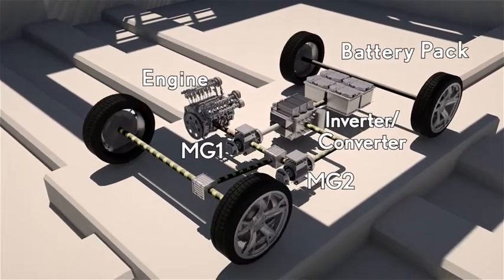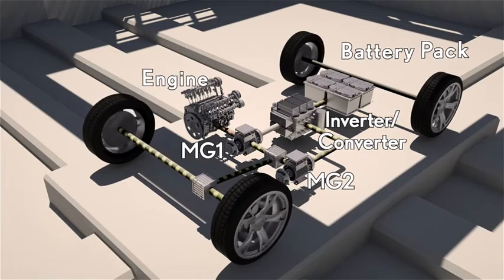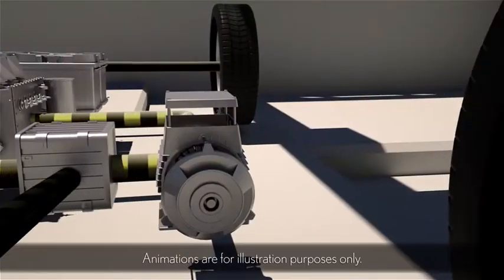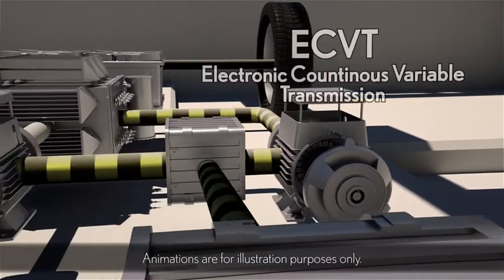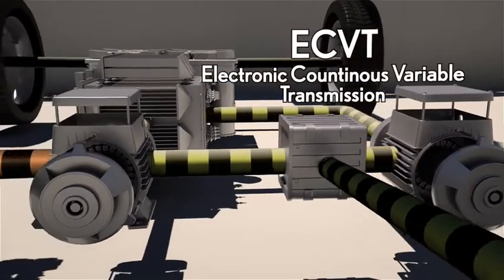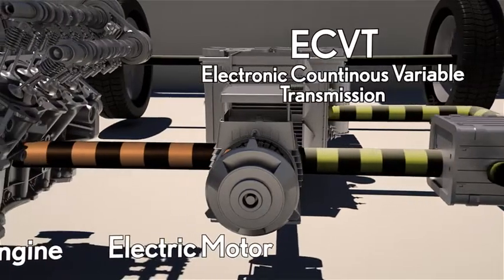The Lexus Hybrid Drive system does just that. Lexus Hybrid Drive is an advanced split series parallel system where an electronically controlled continuously variable transmission, ECVT, allocates the most efficient mix of electric motor torque and gasoline engine horsepower under any driving condition.